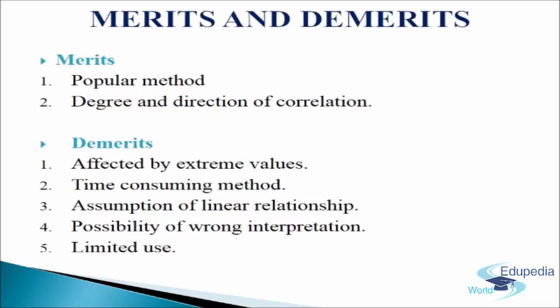However, in many cases the direct measurement of the phenomenon under study is not possible. For example, qualitative variables like efficiency, honesty, intelligence, ability, bravery, beauty, etc. cannot be measured in quantitative terms. If you want to study the correlation between two such qualitative variables, say intelligence and beauty, then Spearman's rank correlation is used. So in the coming slides, we will understand Spearman's rank correlation.